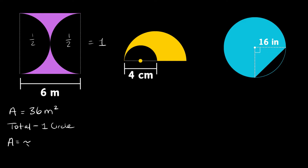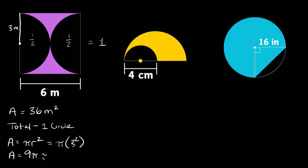The area of any circle is pi r squared. If the whole height is 6 meters, the radius is just 3 meters. So the area equals pi times 3 squared — that's 9 pi, which is approximately 28.27. The total area was 36 meters squared, and subtracting the circle gives us approximately 7.73 meters squared. That's the area of the purple shaded region.